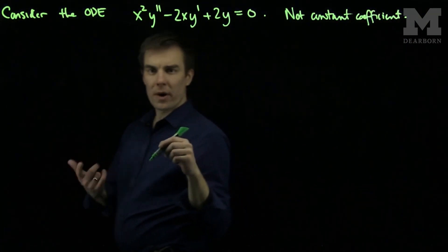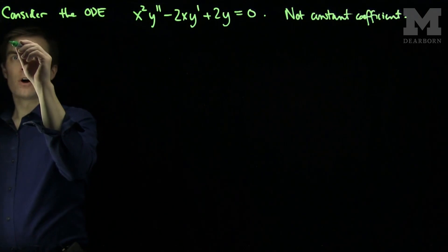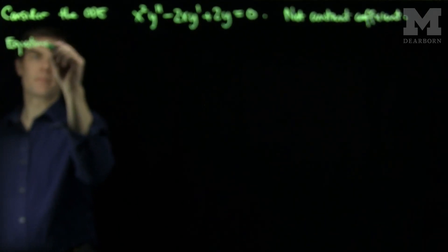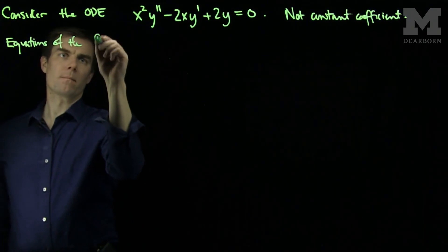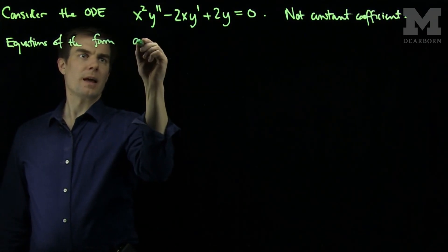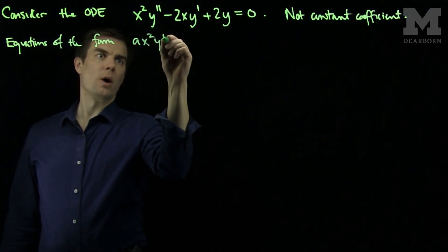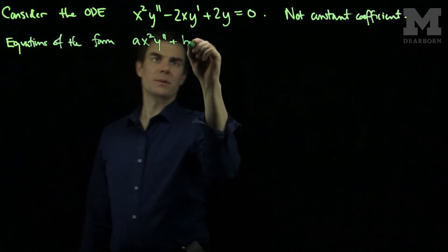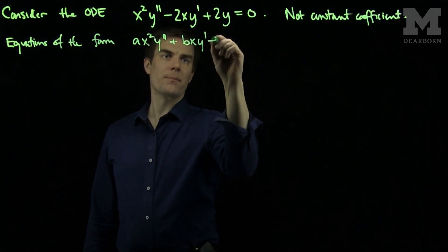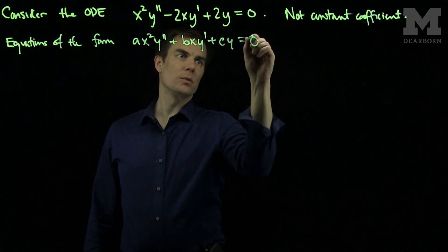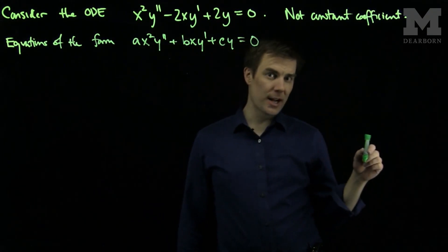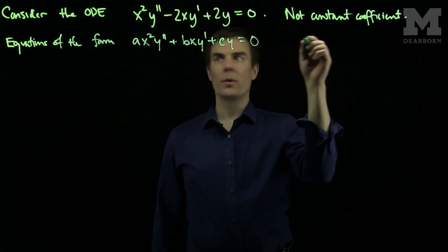However, when the equation is the following special form, equations of the form A x squared y double prime plus B x y prime plus C y equals zero can be reduced to constant coefficient, are called Euler equations.